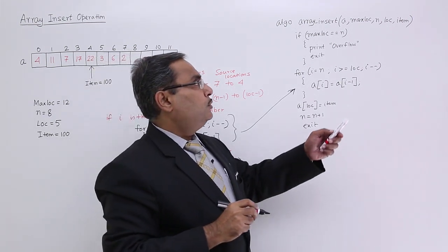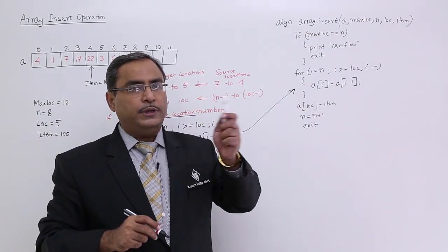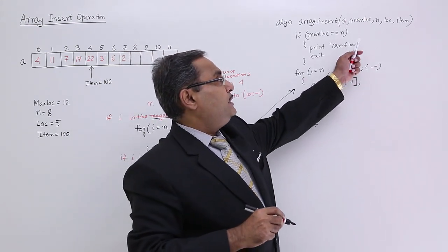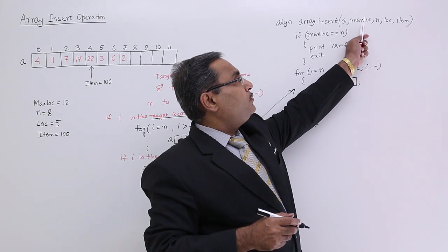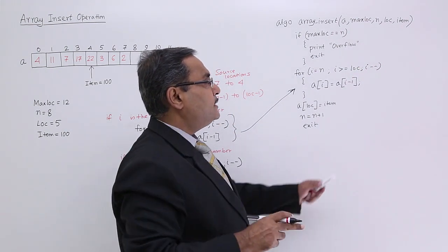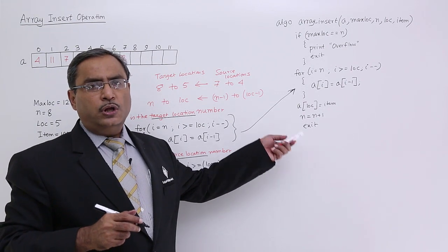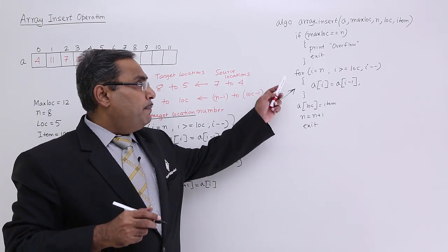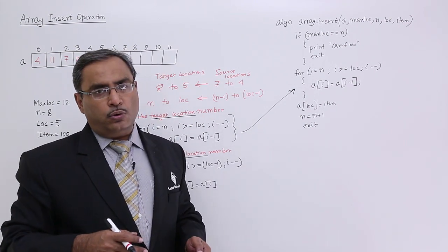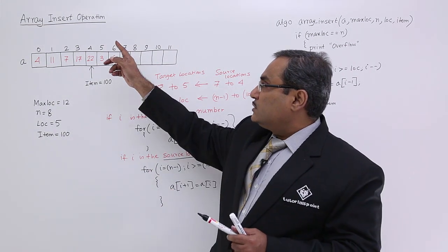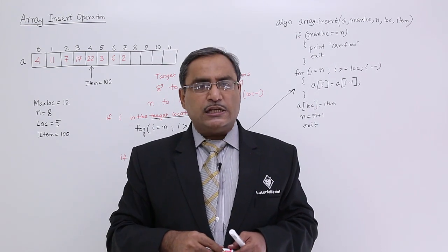When writing this in C, note that the value of n is being increased inside array_insert and that updated value must be reflected in the caller as well. So n must be passed using call by reference. loc, item, and max_loc are input arguments, but n must use call by reference since it gets updated. In this way this algorithm can easily be implemented in C. Please watch the next video where we will cover the array delete operation. Thanks for watching.